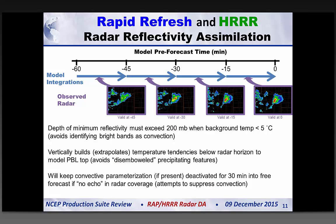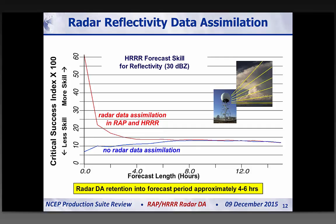We have a few caveats: we want a relatively deep layer of reflectivity to avoid tagging the bright band as convection. We extrapolate temperature tendencies below the radar observations down to the model PBL top to avoid truncating the forcing function arbitrarily high. If applied in the Rapid Refresh with convective parameterization, we deactivate the parameterization scheme for the first 30 minutes of free forecast. Here's statistically what assimilating radar data into the RAP and HRRR looks like — with and without it.